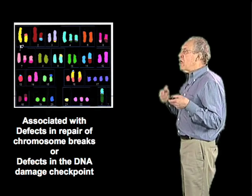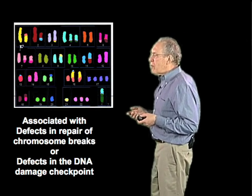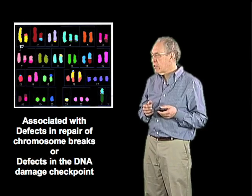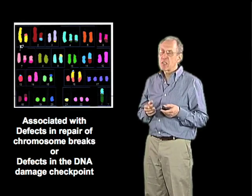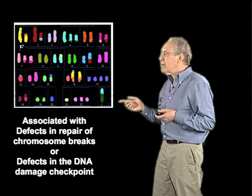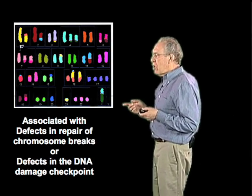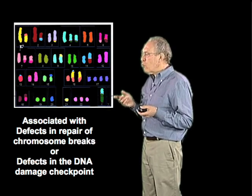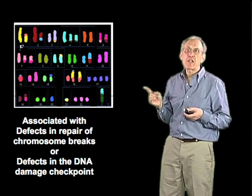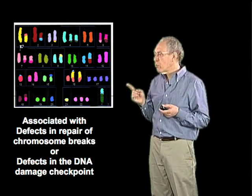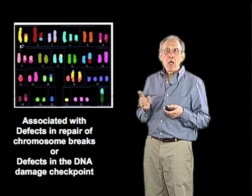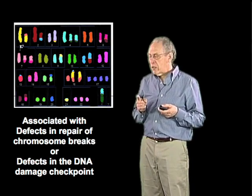What's clear about all of these defects is that normal cells have very accurate mechanisms to repair DNA damage, and it is really in the absence of that repair that we see the kind of karyotypes illustrated with this tumor suppressor gene. As a general rule, cells that show this kind of instability either have defects in the way they repair chromosomal breaks, or they have defects in what is known as the DNA damage checkpoint.